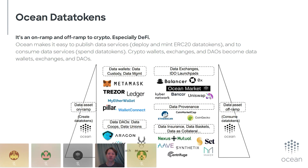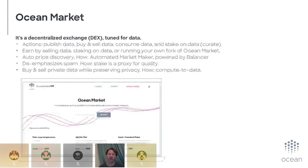In between, what was traditionally pure money and pure tokens gets repurposed towards data. MetaMask becomes a data wallet, Aragon becomes a data DAO, Balancer becomes a data exchange, CoinMarketCap becomes a data provenance tool, and we can even get creative with things like Nexus Mutual becoming data insurance tools. We're leveraging all this great infrastructure developed over many years and repurposing it towards data, enabling great interoperability.